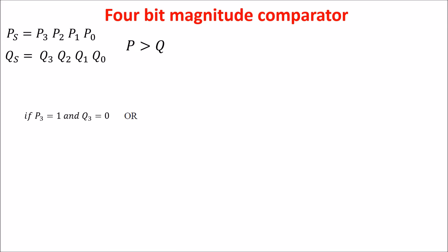The second condition occurs if P2 is greater than Q2, and of course the most significant bits are equal. So if P2 is 1 and Q2 is 0 and P3 is equal to Q3, we neglect the less significant bits.